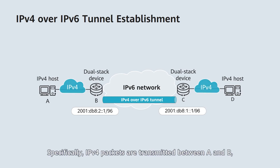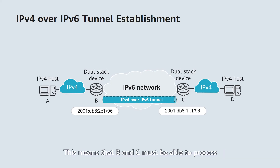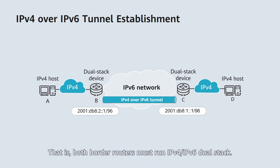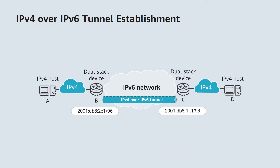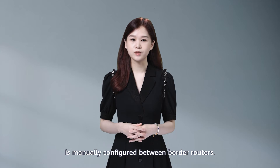Specifically, IPv4 packets are transmitted between A and B, and between C and D, whereas IPv6 packets are transmitted between B and C. This means that B and C must be able to process both IPv4 and IPv6 packets. That is, both border routers must run IPv4 and IPv6 dual stack.